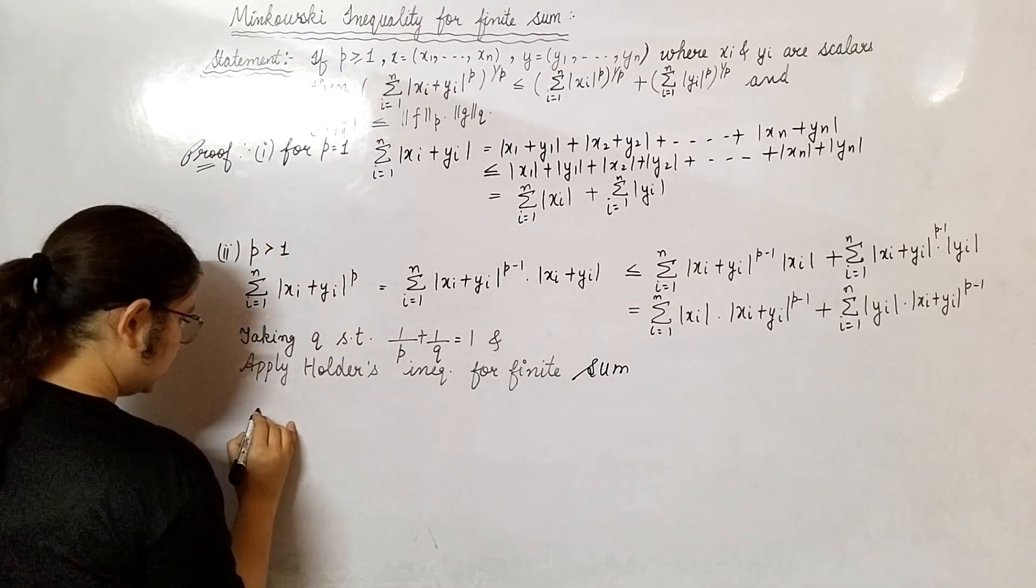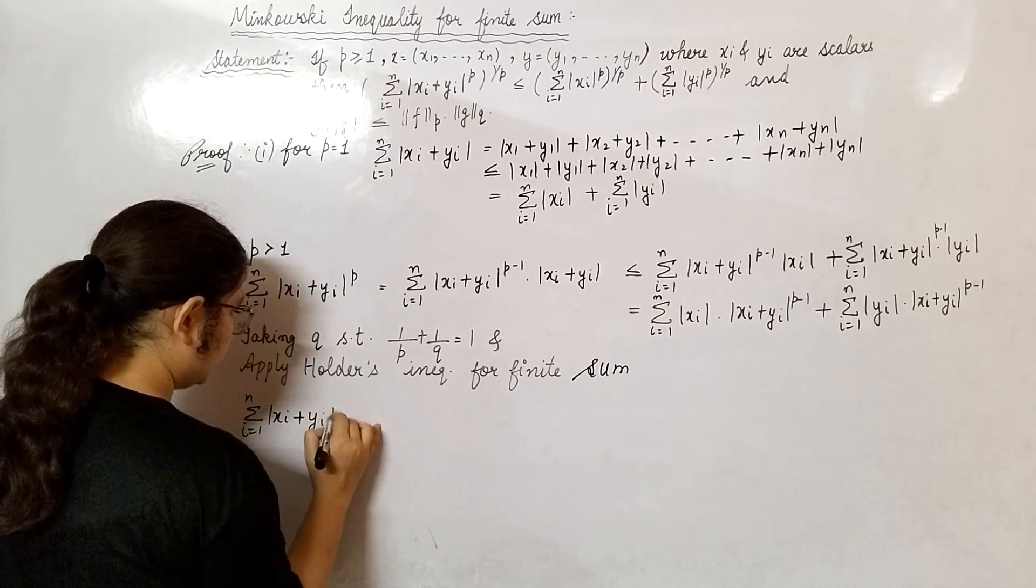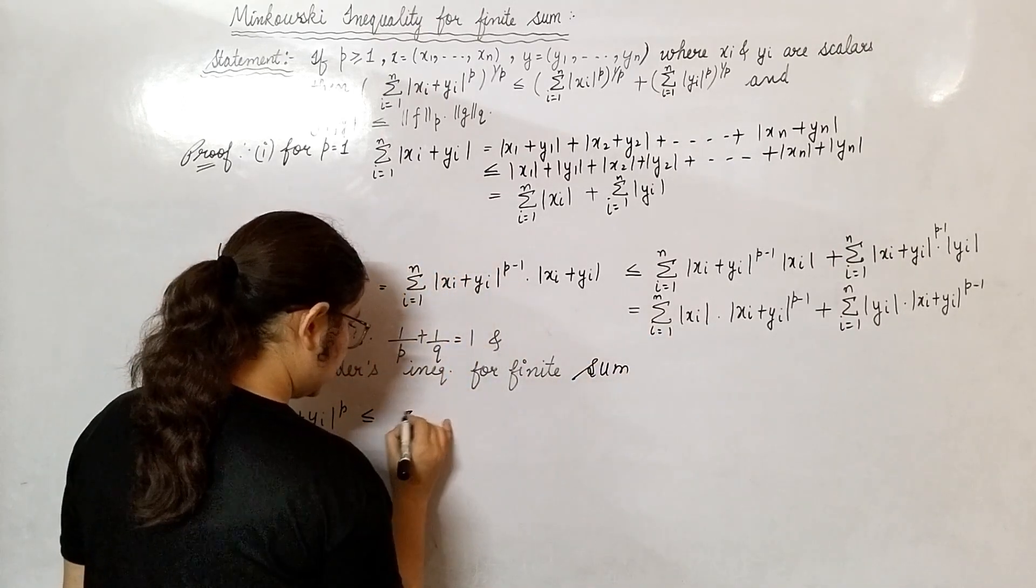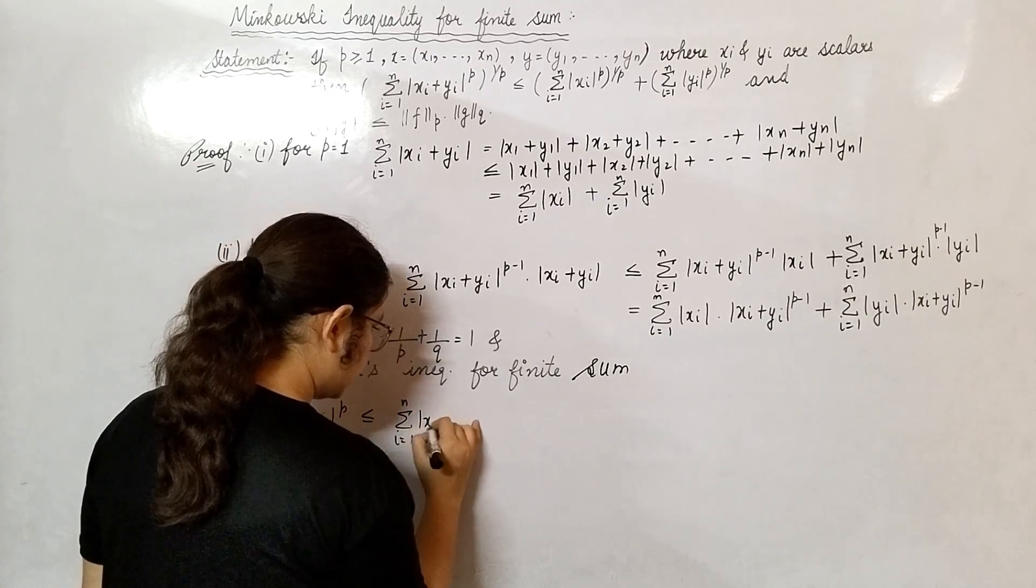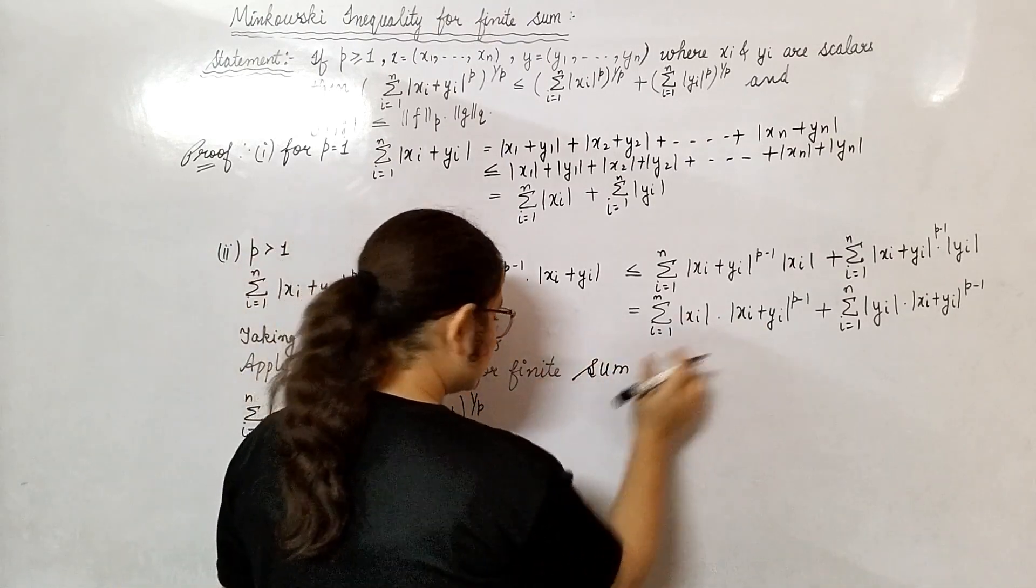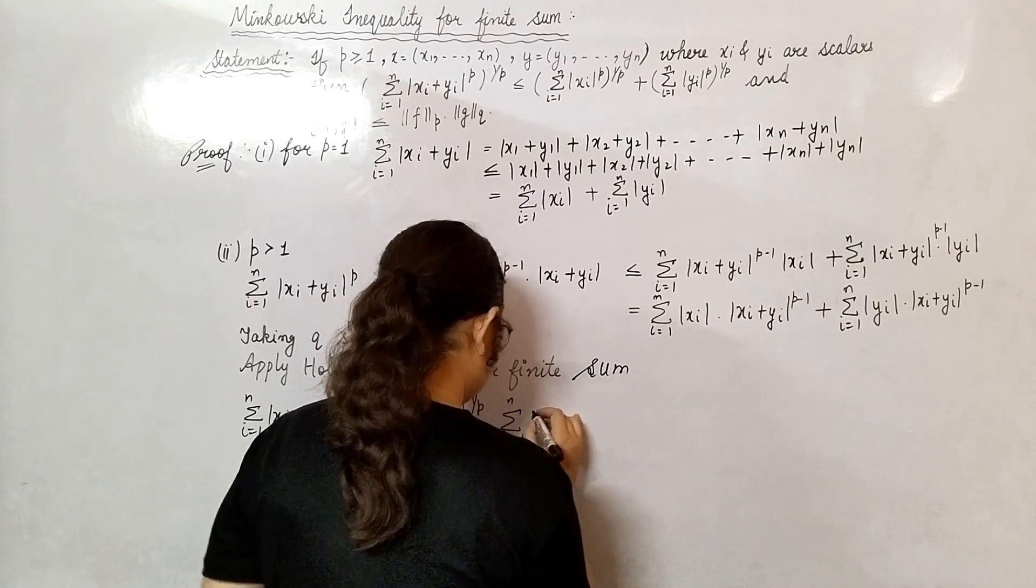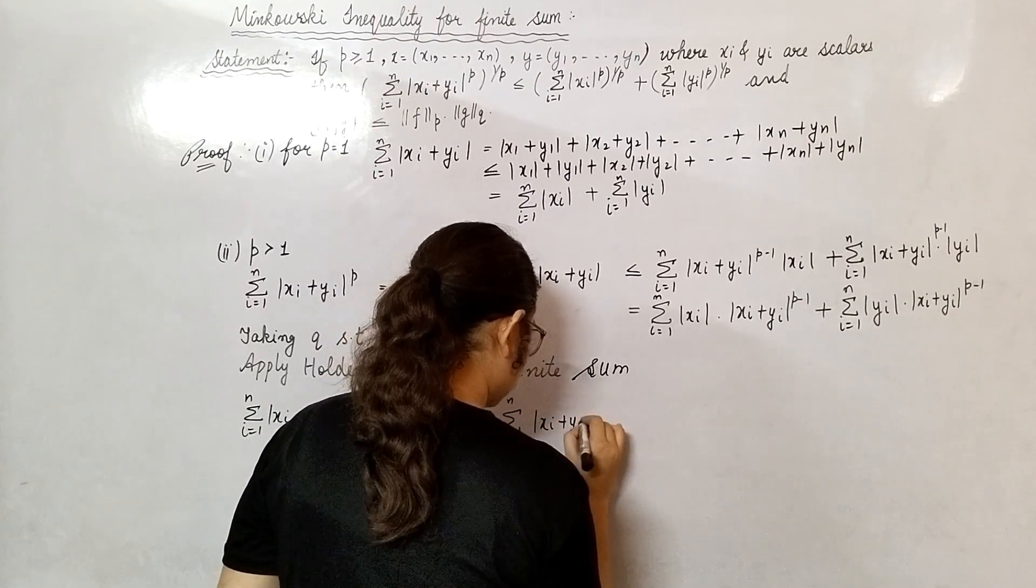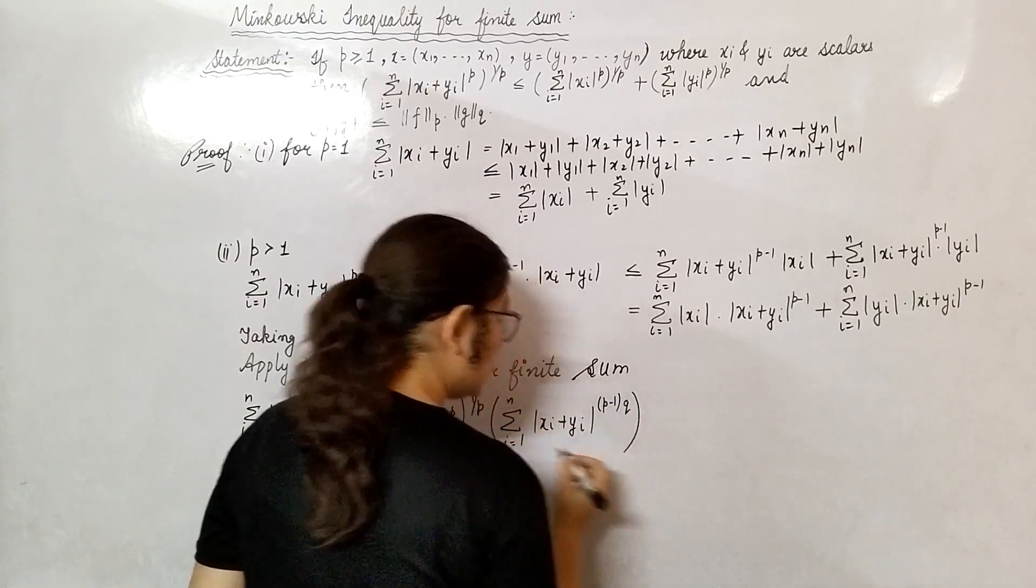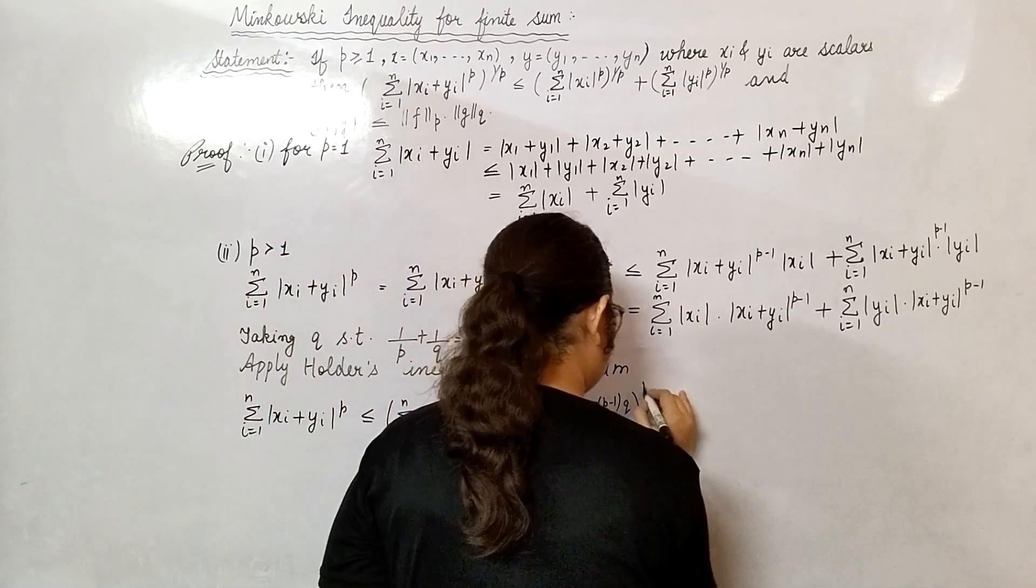Finite sum. What we have? Summation i from 1 to n, |x_i + y_i|^p is less than or equal to, by Hölder's inequality, summation i from 1 to n |x_i|^p to the power 1/p. And this goes into q, into L^q space. |x_i + y_i|^((p-1)·q). The p-1 power was there, nothing was here, so multiply by p. Here multiply by q.